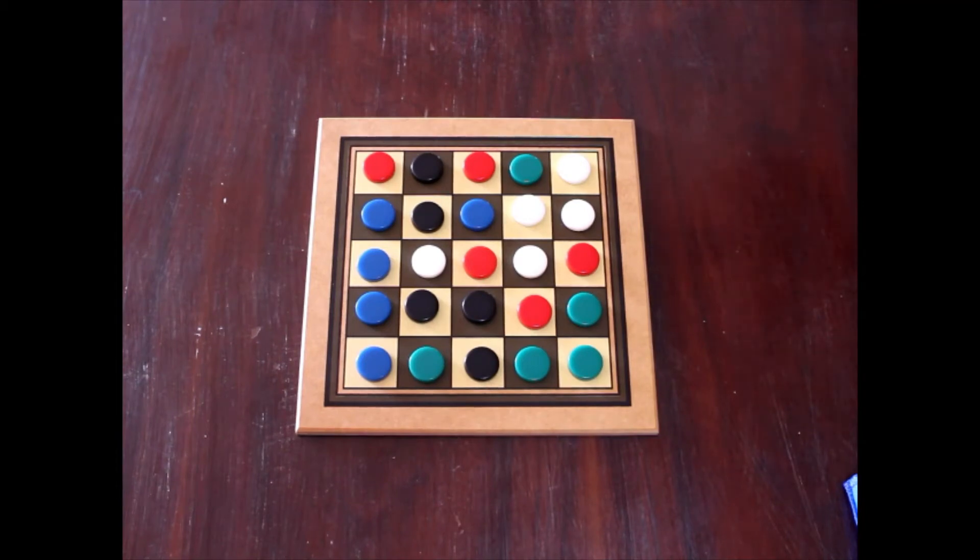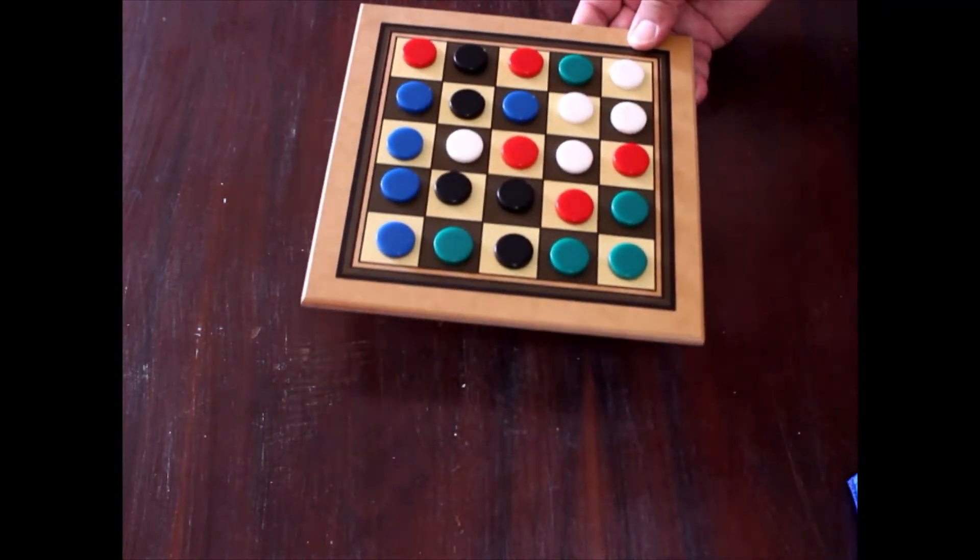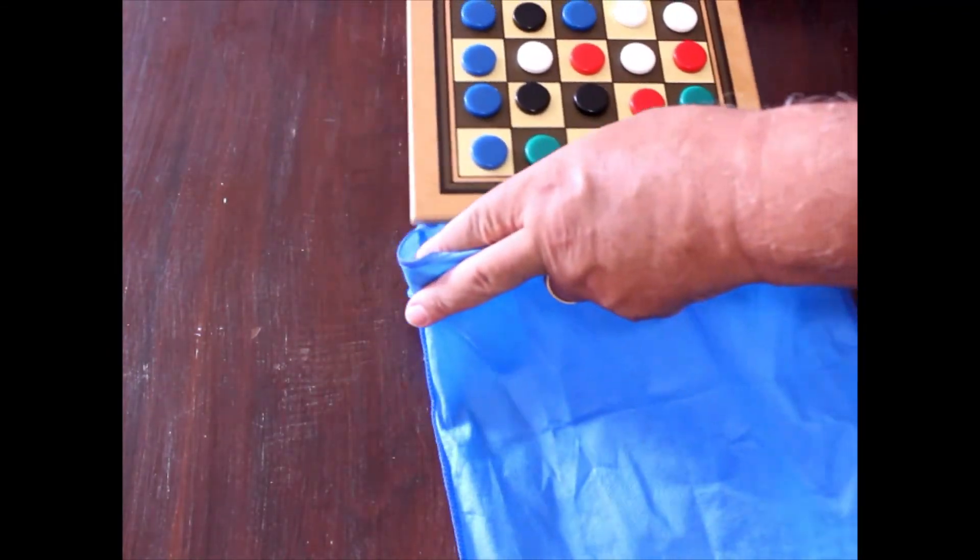For each of the three different organized situations we set up a different random situation. Let's see how it works. I'm going to mix the chips and set up the first random situation.